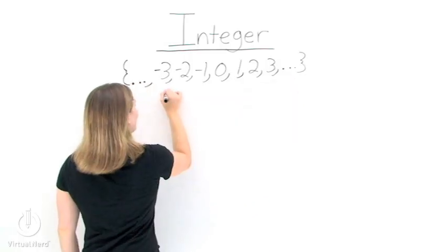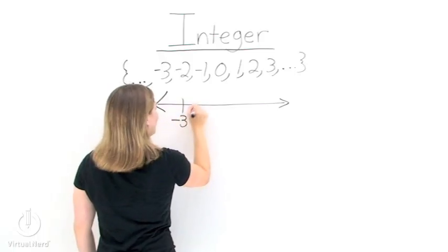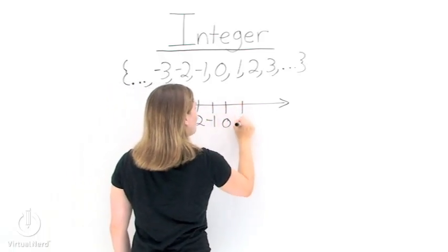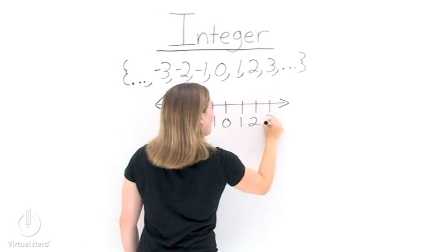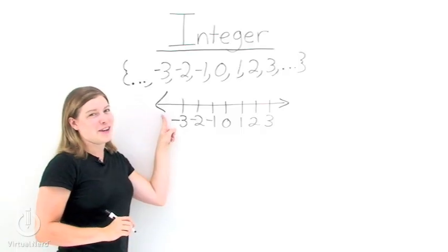Now if we show the set of integers on the number line, here's what it looks like. We have negative 3, negative 2, negative 1, 0, 1, 2, and 3. We could go on forever in both directions, but that's why we have the arrows here.